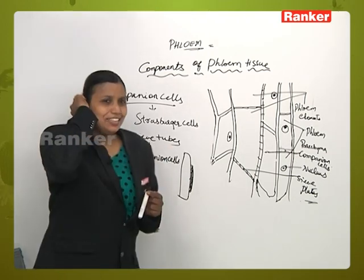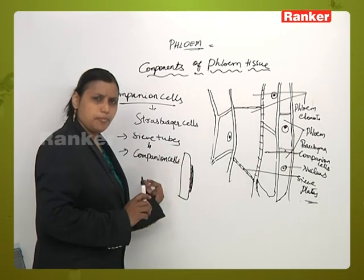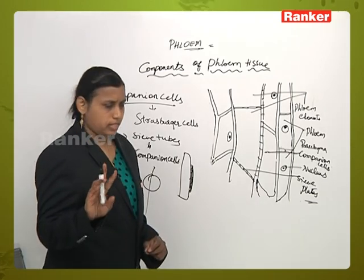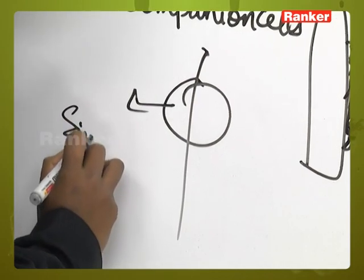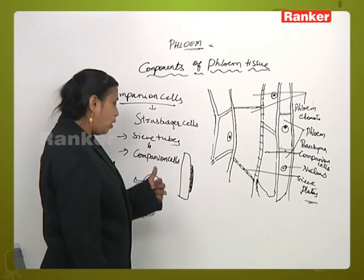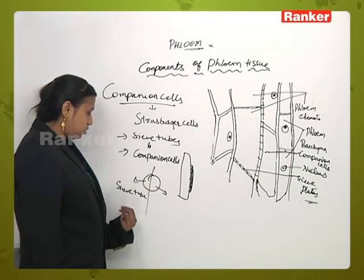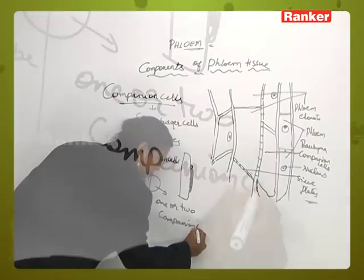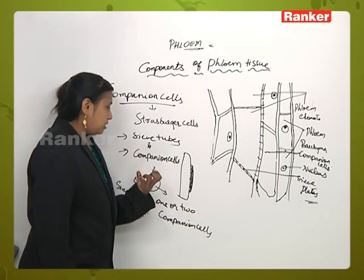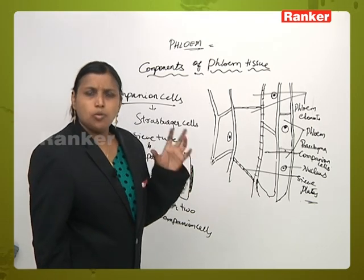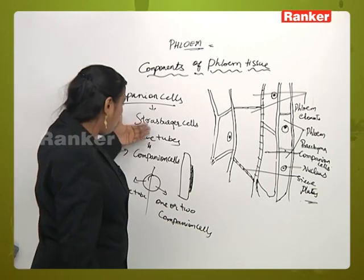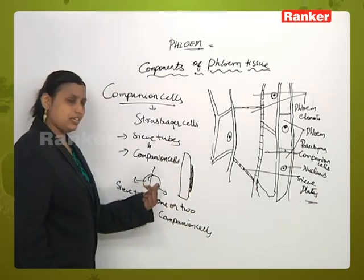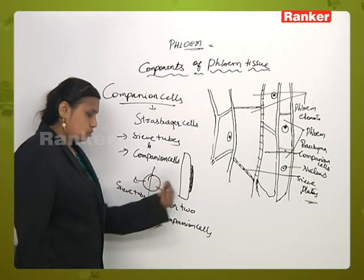So what does it mean? The origin of sieve tubes and companion cells occurs from the same mother cell. If there is a division in the mother cell, it divides into a first cell and a second cell. The first cell gives rise to sieve tubes and the second cell may give rise to one or two companion cells.